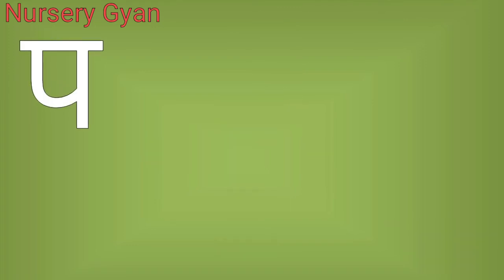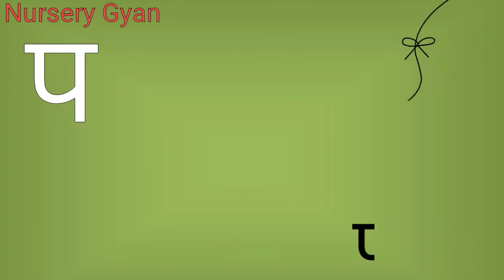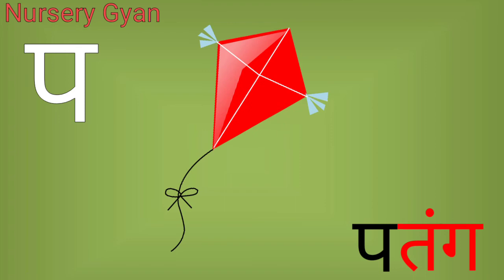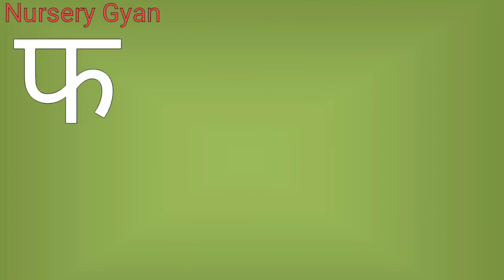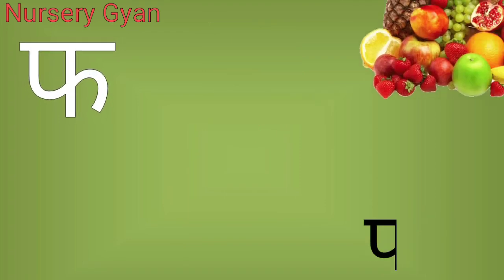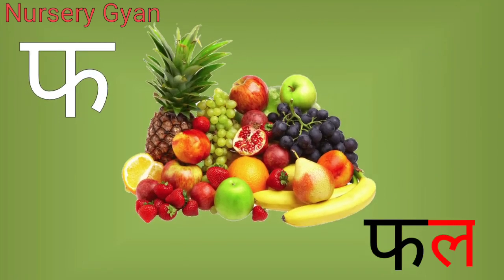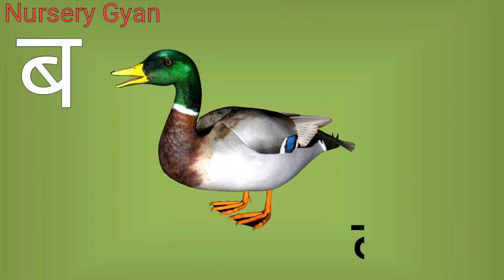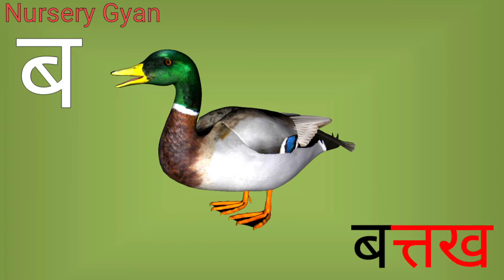प — प से पतंग। फ — फ से फल। ब — ब से बतख।